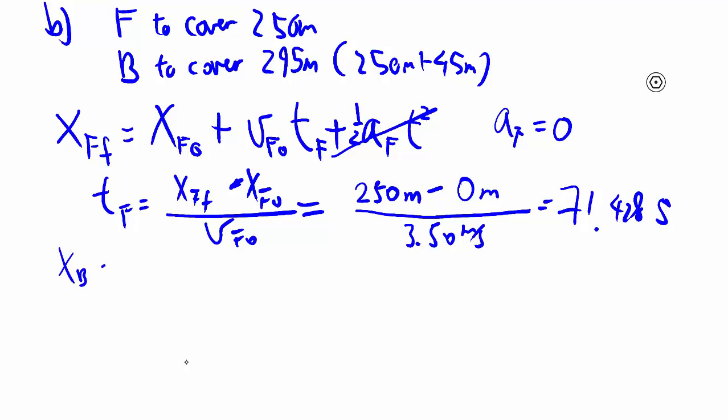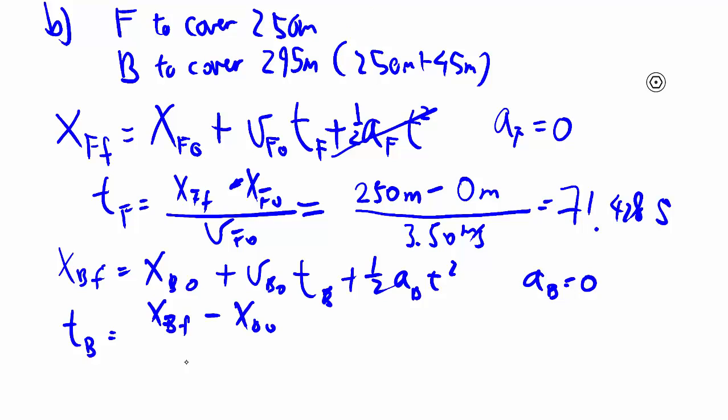Then in terms of my back runner, I write everything the same except instead of the front runner, everything refers to the back runner, and that's good practice because we have two different speeds here. And again, ab is equal to 0, so tb is similarly his final position minus his original position divided by the back runner's speed.